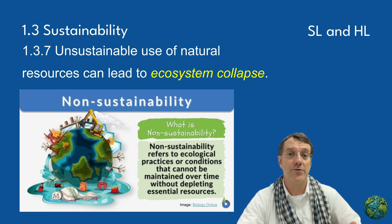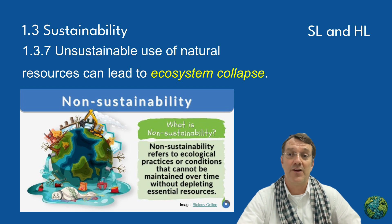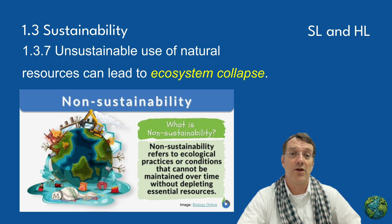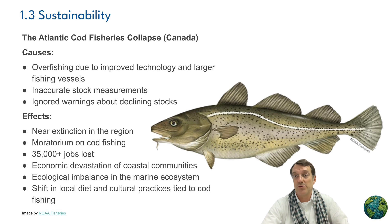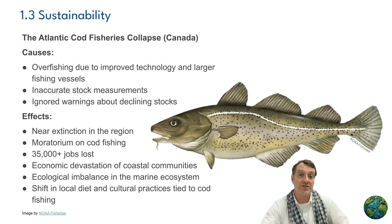We're going to look at a few case studies to see real-world examples of how this happens. The first case study is the collapse of the Atlantic cod fisheries in the North Atlantic. This was caused by overfishing due to improved technology in the mid-20th century and an increase in the size of fishing boats.